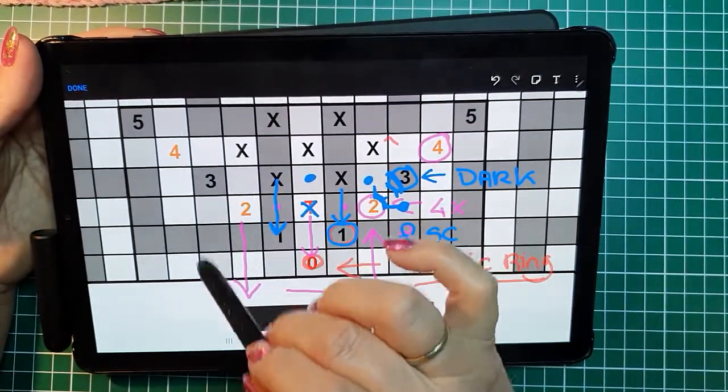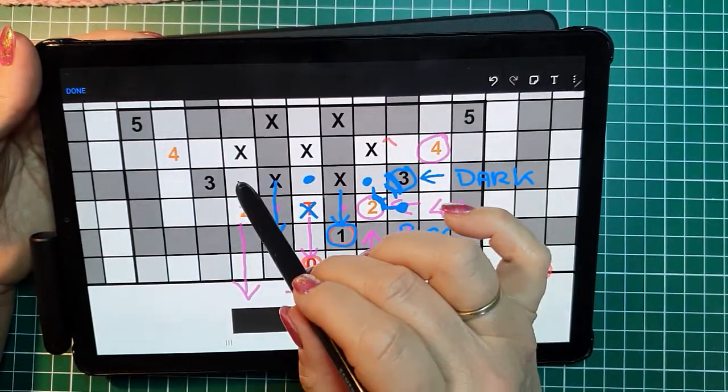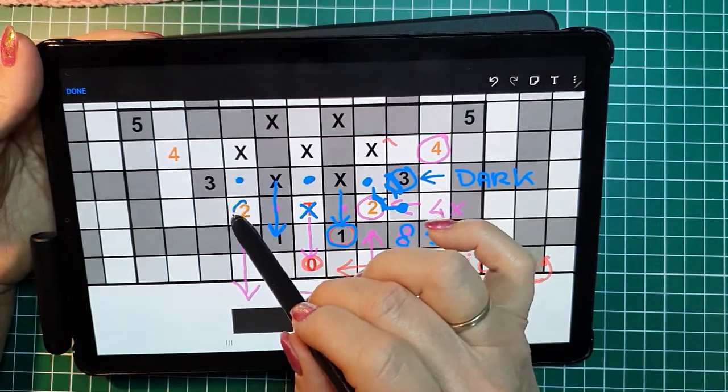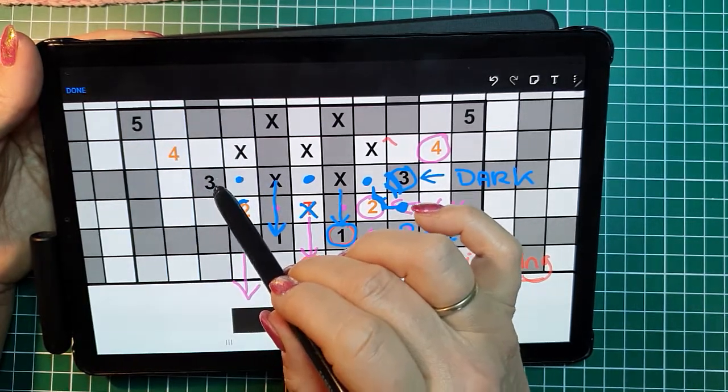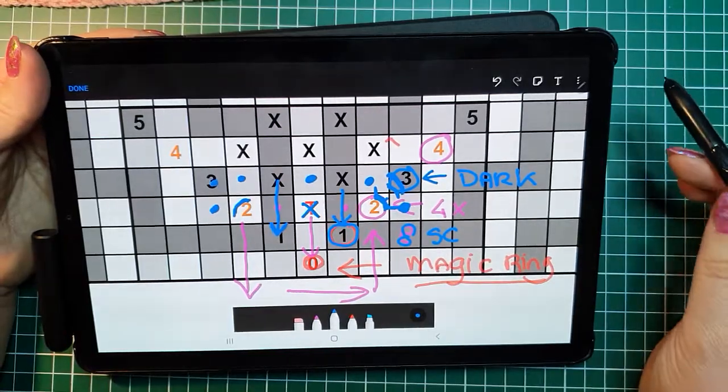Then we have another corner, because we have four corners in a square. It's the same corner as this one. You do a single crochet in the back loop of the pink, a chain one, and a single crochet, all in the back loop of the pink.